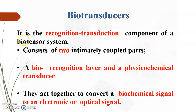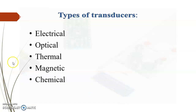The biotransducer is the recognition-transduction component of a biosensor system. It has two components: the biorecognition layer and a physico-chemical transducer, which act together to convert a biochemical signal into an electronic or optical signal. The types of transducers could be based on electrical measurement, optical measurement, thermal measurement, or magnetic and chemical measurement.